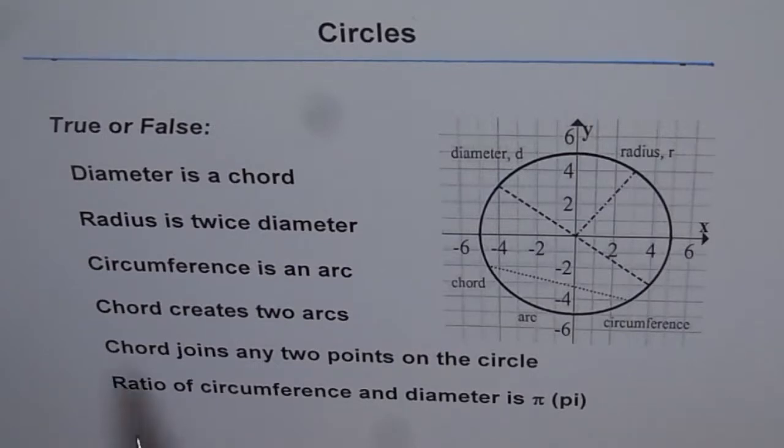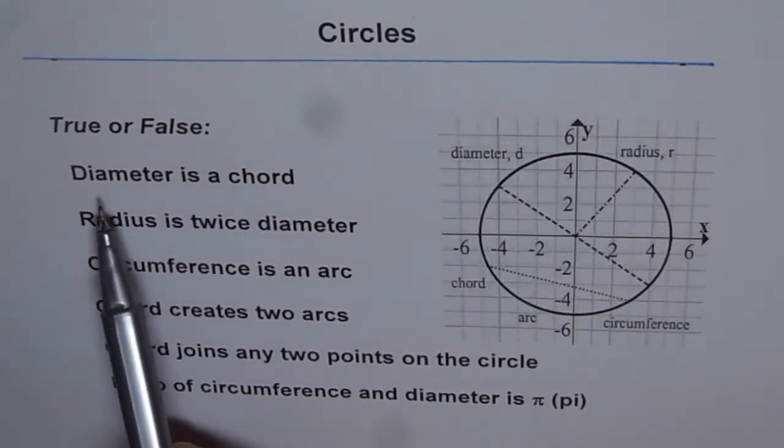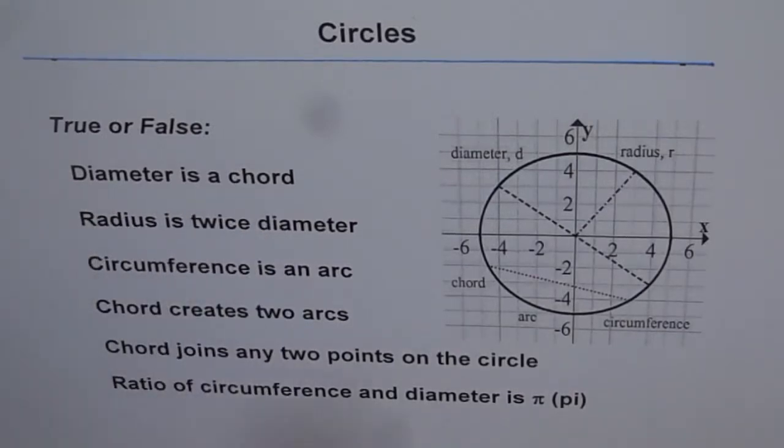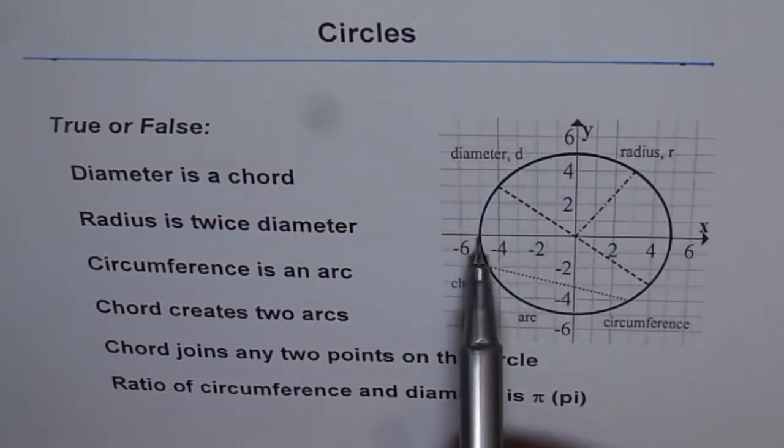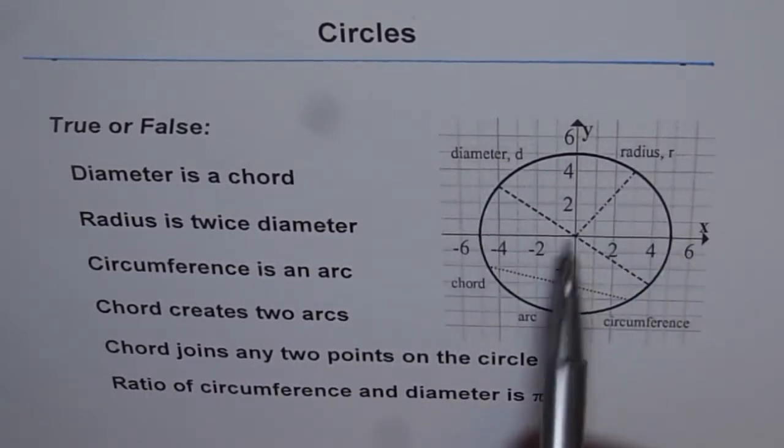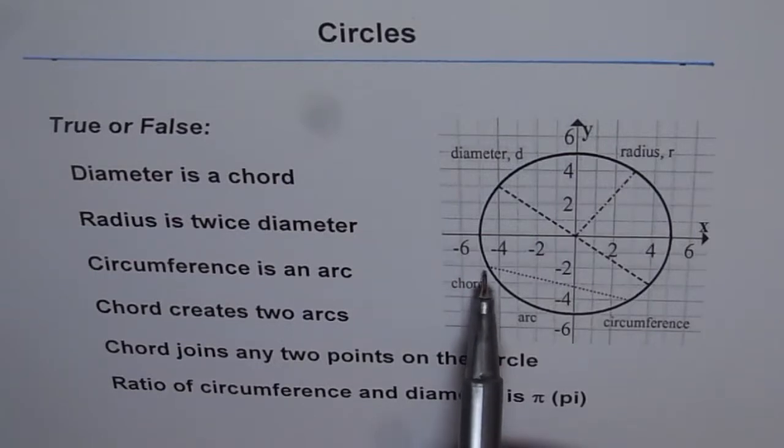So the first one is diameter is a chord. As we know, diameter is from one end to the other going through the origin, and chord is joining any two points on the circumference.